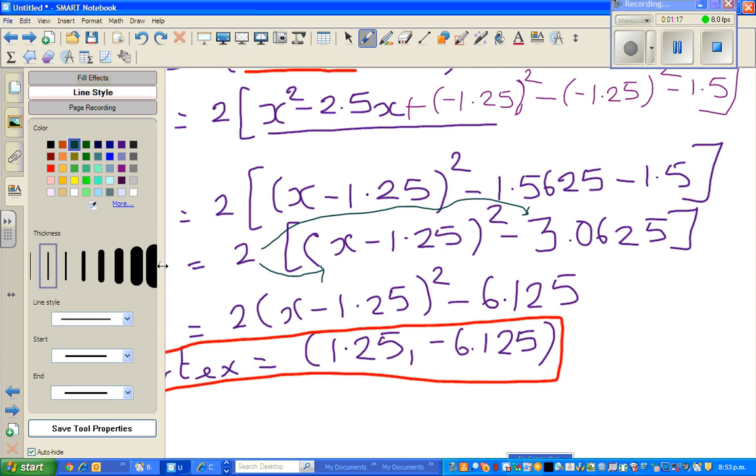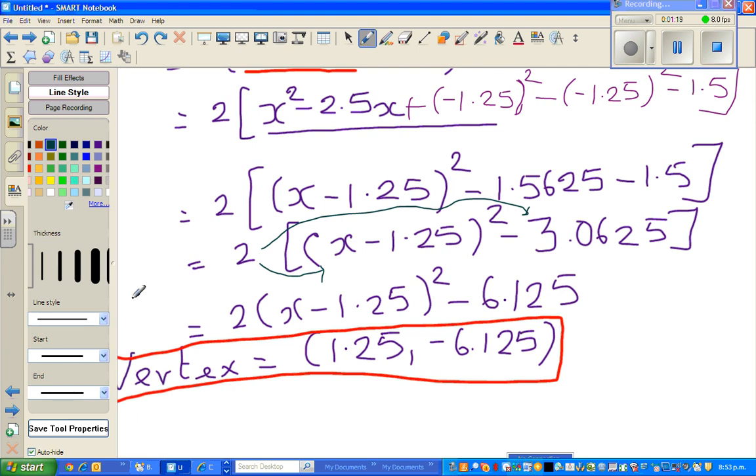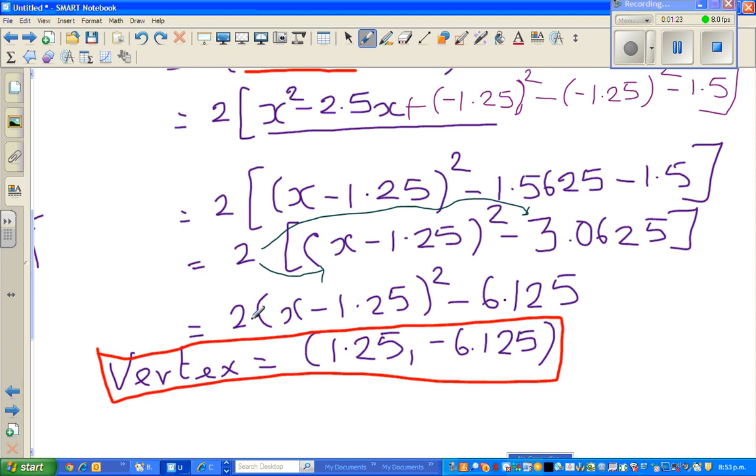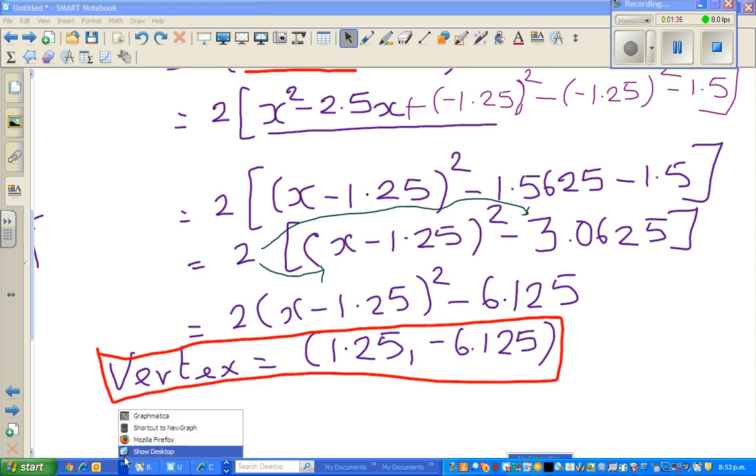So what I've done is minus 2 times 3.0625. Or you can understand also, 2 times 3 is 6, and 0.0625 times 2 is 0.125. It's always good to check on a calculator.